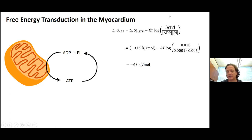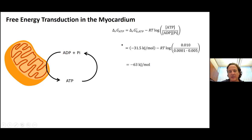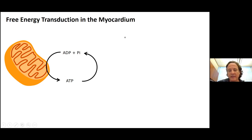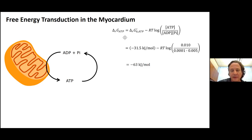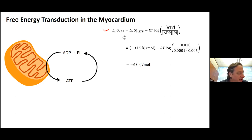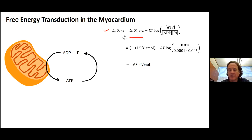The products of hydrolysis are the substrates for ATP synthesis. Here is the equation for the free energy of ATP hydrolysis, or the ATP hydrolysis potential. There's an apparent or effective reference Gibbs free energy, and then there's this entropy term which has to do with the log of the mass action ratios of the concentrations.